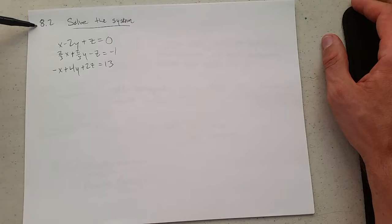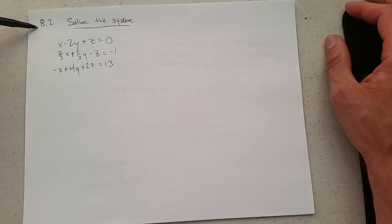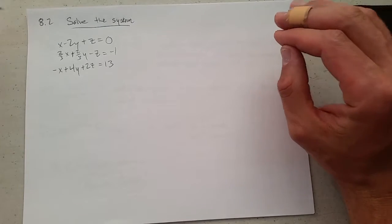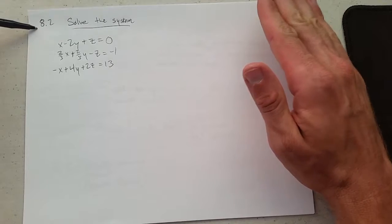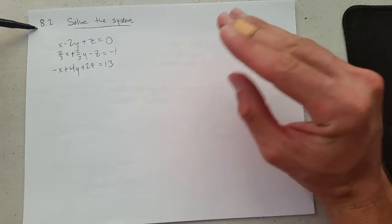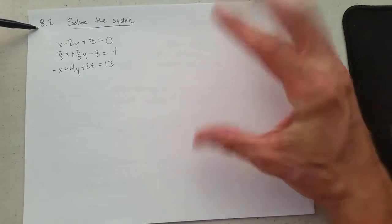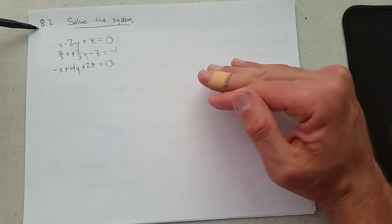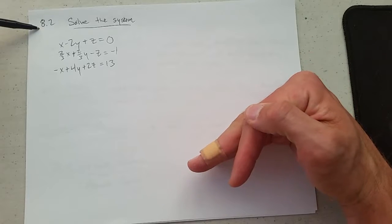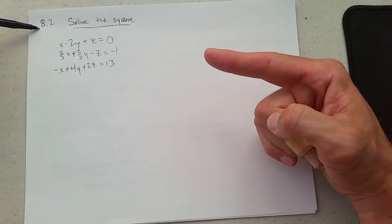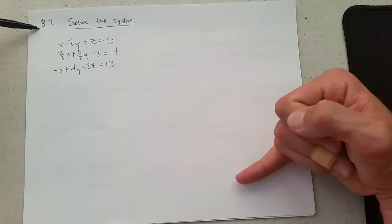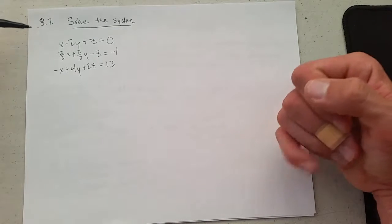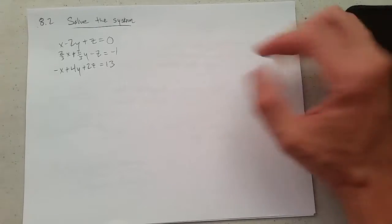Now we're going to solve a system. I'm only going to do one example here. It's a lot of new information and I strongly recommend you go through the book. I've done each part individually, now we're going to put it all together. So I'm going to solve this system, turning it into a matrix, reducing, and then writing out the solution.